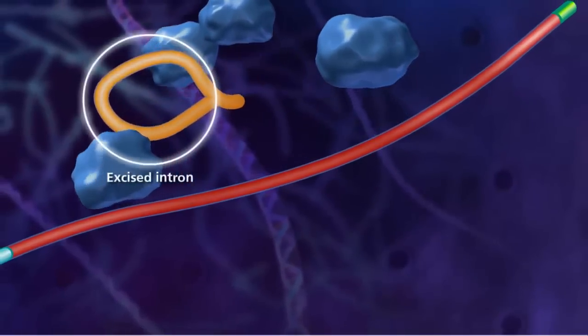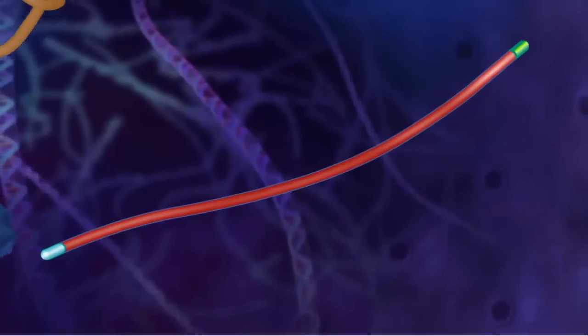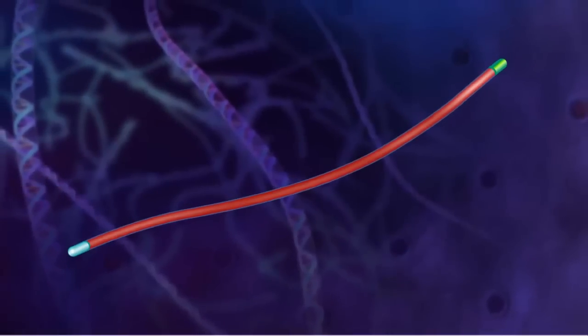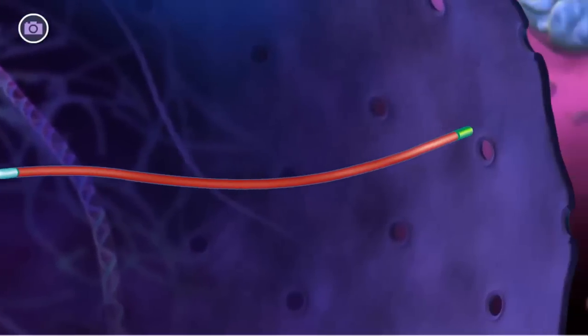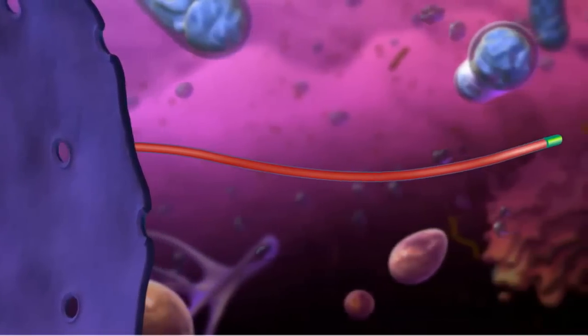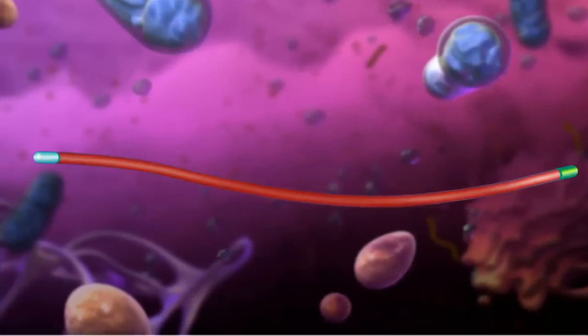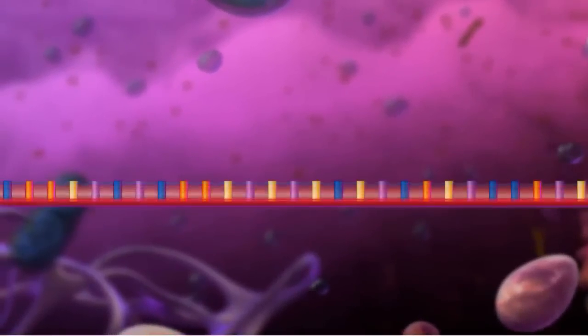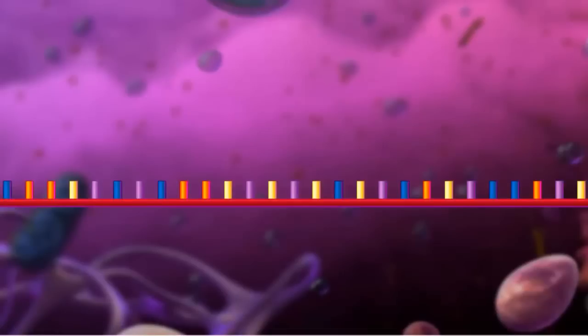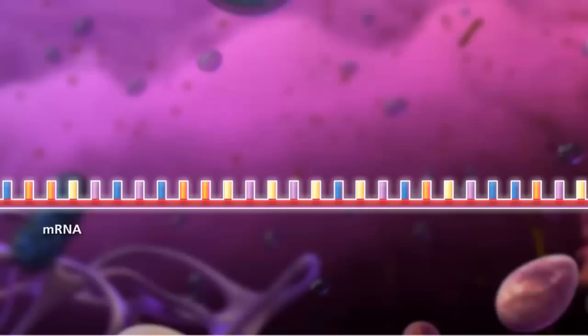This produces a mature messenger RNA strand that can leave the nucleus through a nuclear pore and enter the cytoplasm to begin translation. How is the information in the mature messenger RNA strand translated into a protein?